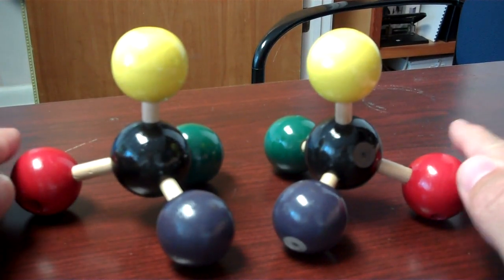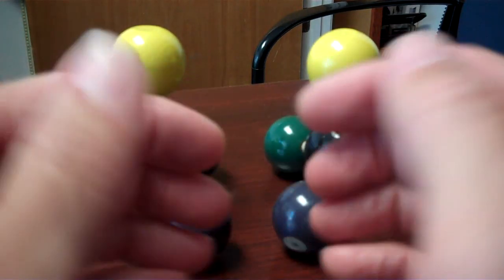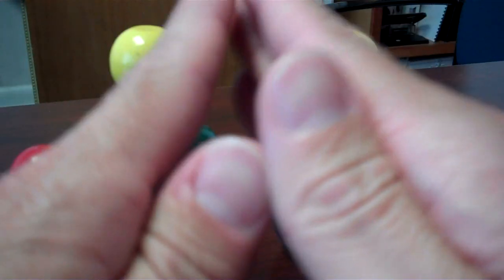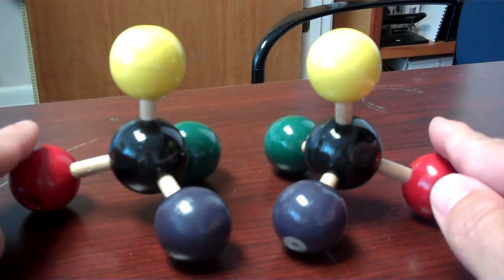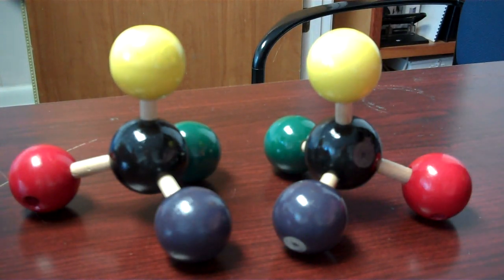And so these two molecules have the same relationship that your hands do. Your hands are non-superimposable mirror images of each other. They're very similar of course but they are not identical. And so that's why we sometimes refer to these molecules as having handedness or being chiral because they have that same relationship.